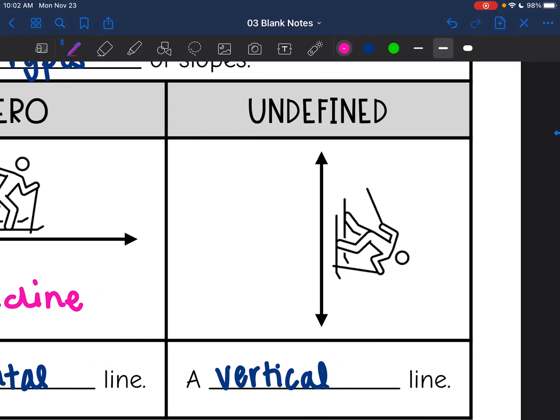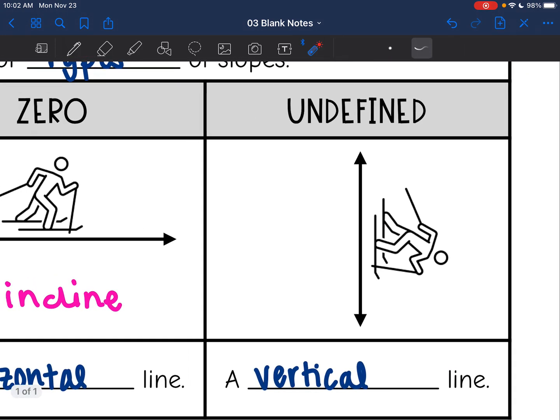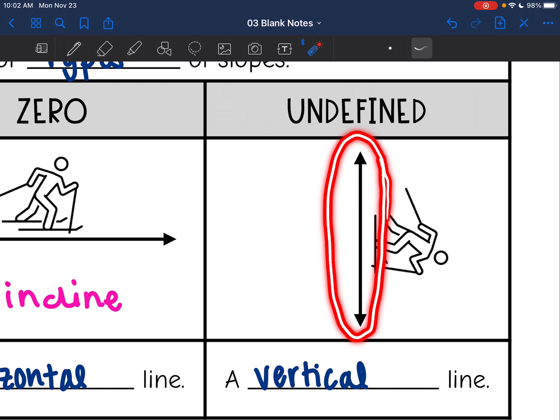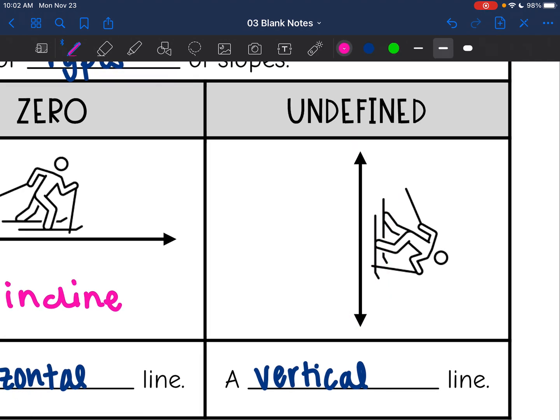And then undefined is our vertical line whenever it's just going up and down. So that's kind of a way that you can remember that up and down line is undefined. Starts with a U just like up and down does.